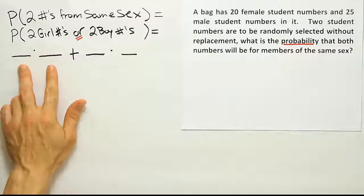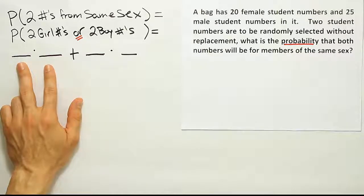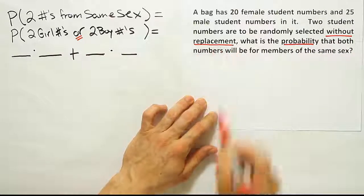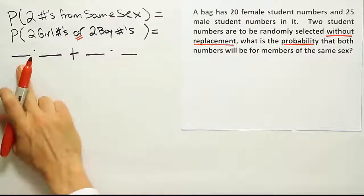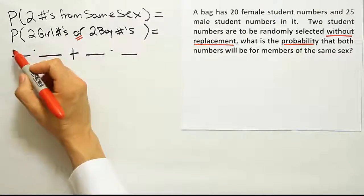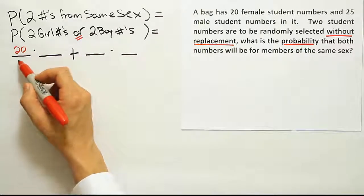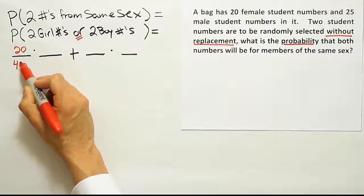So let's imagine that this first scenario is the scenario of getting two girl numbers without replacement. Don't forget, we're not putting the numbers back in, right? So I reach into the bag. I'm going to pretend that I get a girl on the first time. What was the probability of that occurring? Well, it would have been 20 girl numbers, female numbers. I have a total of 45 total numbers in the bag, right?